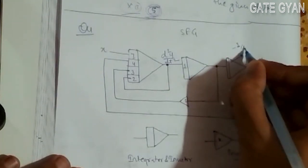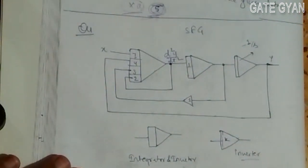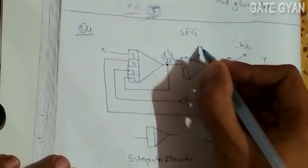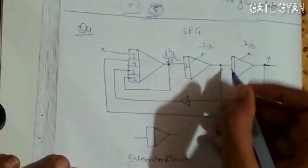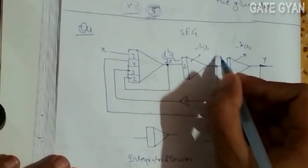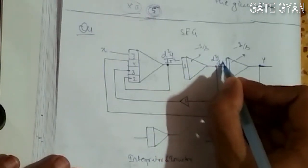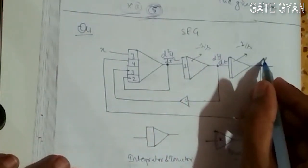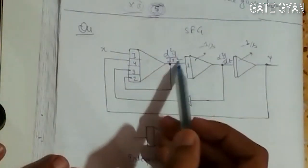It will be represented by -1/s. This will be dy/dt, and after integration it will be y. And this is d²y/dt².